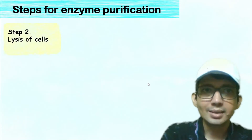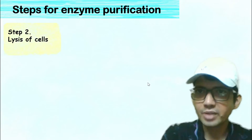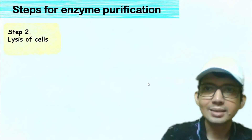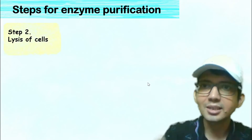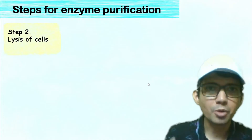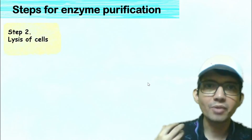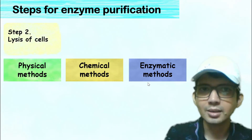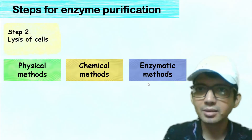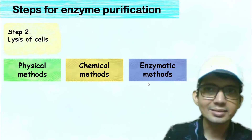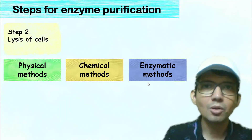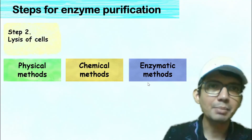The second step for enzyme purification is lysis of the cell. Cell lysis is usually required for the purification of intracellular enzymes. Cell lysis can be achieved by various methods: physical methods, chemical methods, or enzymatic methods.